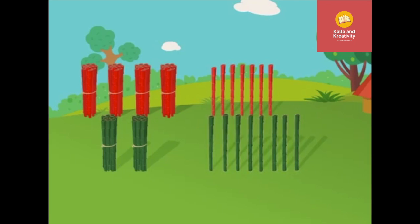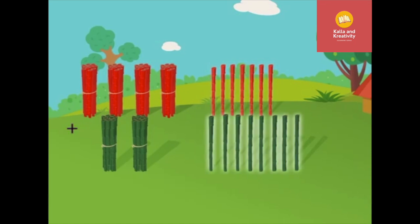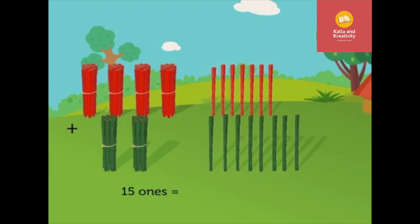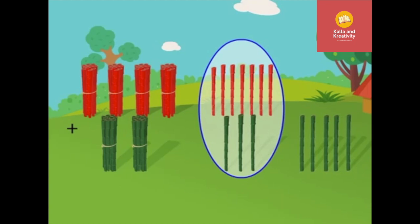Now, as we know, we first have to add the ones and then the tens. So, seven-ones plus eight-ones is equal to fifteen-ones. Now, fifteen-ones is equal to one-ten and five-ones. So, we regroup it.